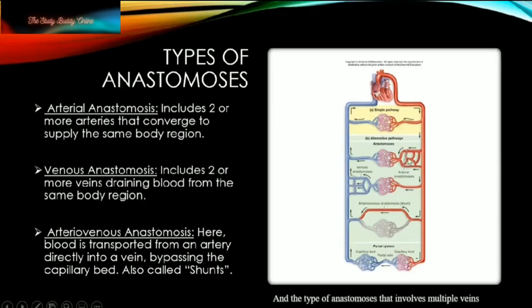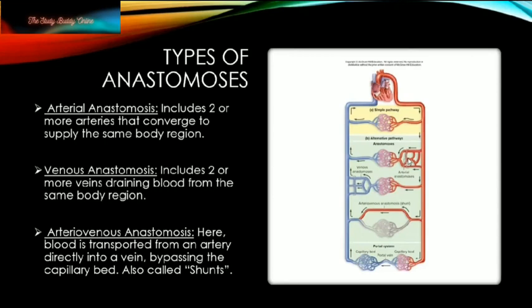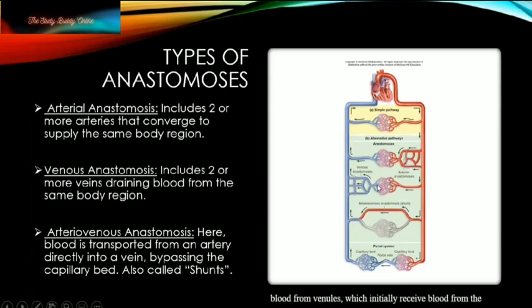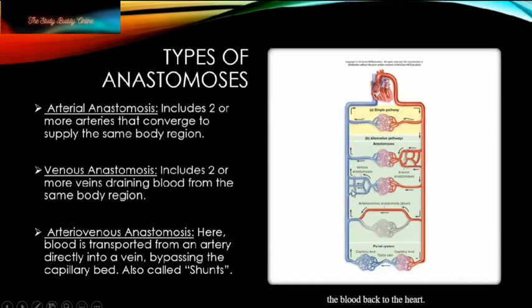The type of anastomosis that involves multiple veins is called venous anastomosis. As seen here, two or more veins converge together, receiving blood from venules which initially received blood from the capillary beds. Together, these veins carry the blood back to the heart.